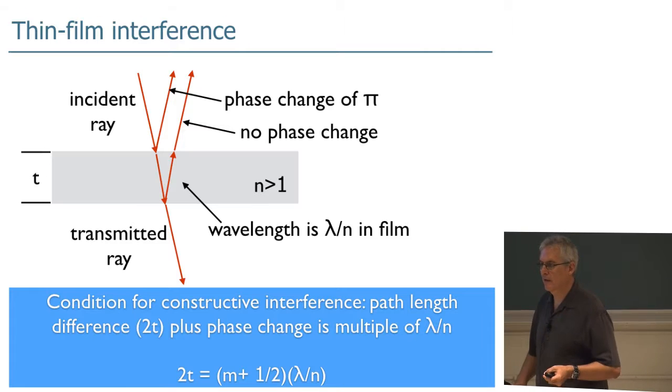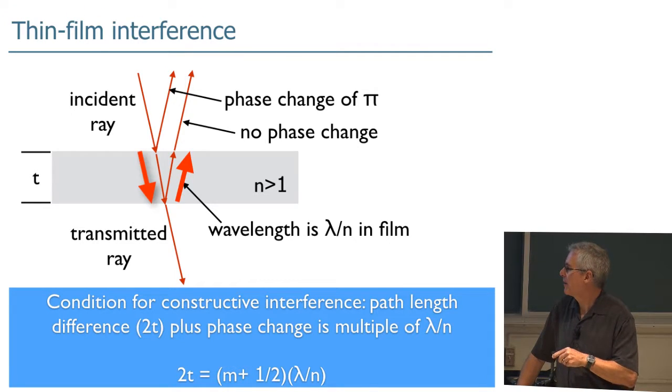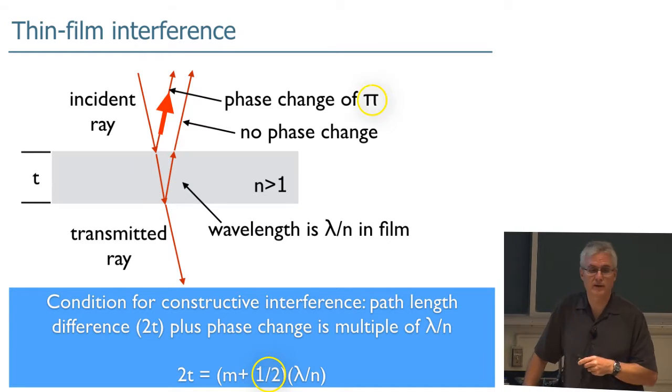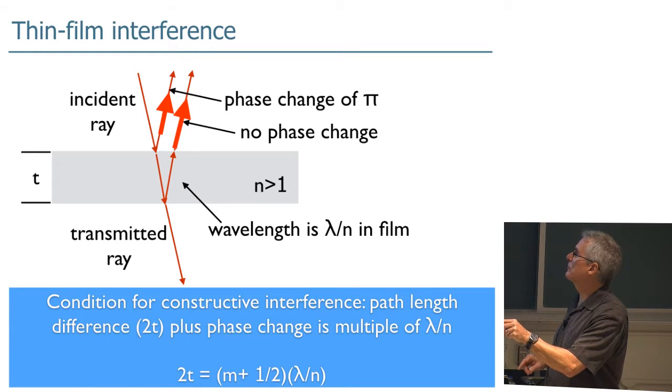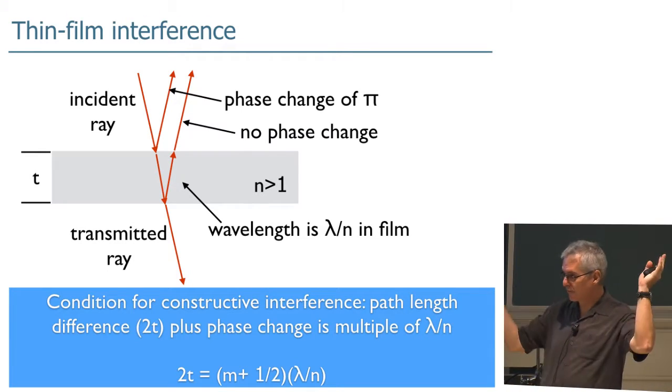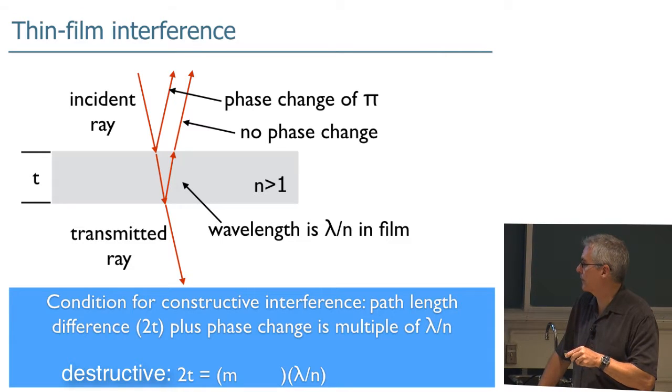What would be the condition, do you think, for getting destructive interference? Anyone want to take a guess? m here is an integer. It's an integer number of wavelengths inside here. We have this half a wavelength inside there to account for the phase change for this ray. So that puts it back in phase with the other, that puts those two back in phase with each other. How do you make them out of phase and get destructive interference? Take out the one half. Destructive interference corresponds to 2t equals m times lambda over n, the index of refraction, where m is some integer.